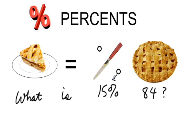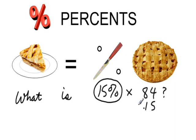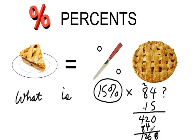Now, we can't really multiply with percent. In order to do math with it, we're either going to have to change it to a decimal or to a fraction. Let's change it to a decimal. 15% is 0.15. So 15% of 84 is 0.15 times 84.